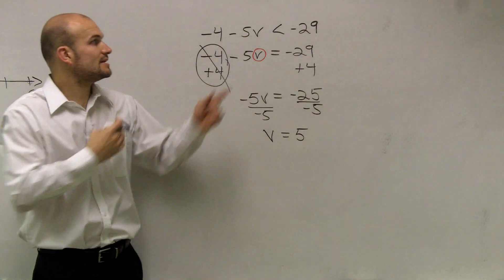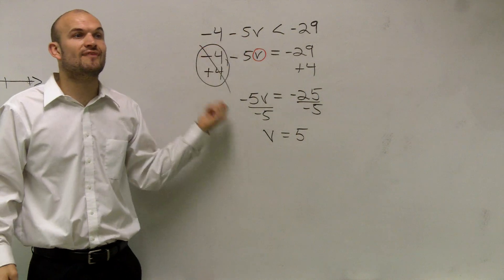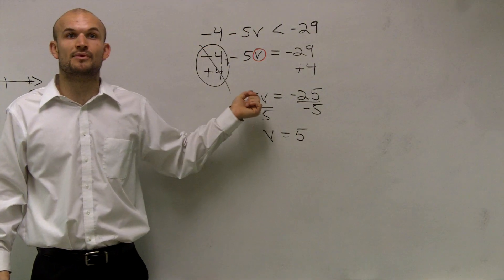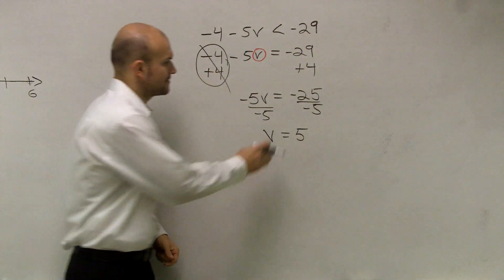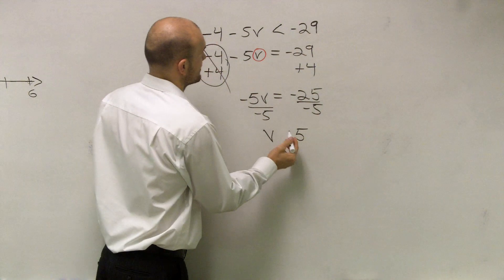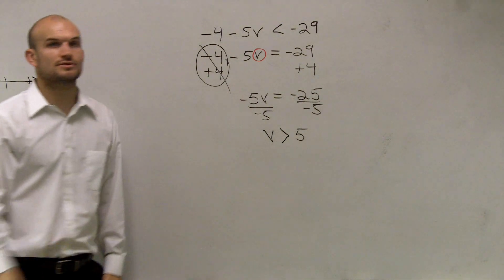Now what we need to do is input back our symbol. Remember, whenever you divide or multiply by a negative number, we have to do what with the sign? Flip it. So therefore, instead of opening to the right, it opens now to the left.